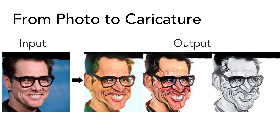WarpGAN needs to do three things. Number one, generate artistic texture styles that are different from normal photos. Number two, exaggerate the face with geometric deformation. And three, keep the characteristics of the given face to make it still identifiable.